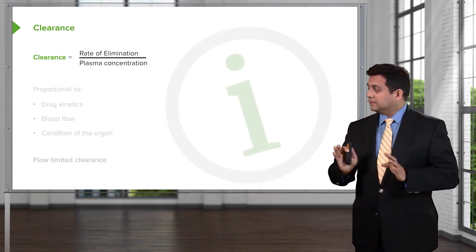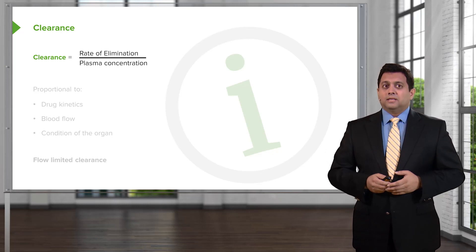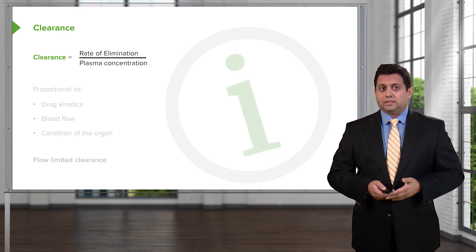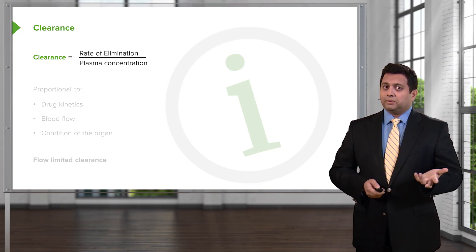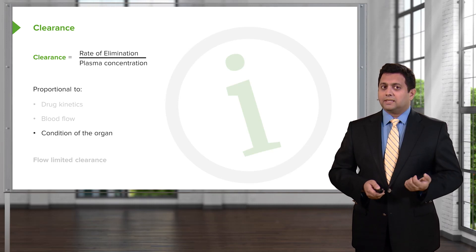First-pass metabolism is an important concept when we talk about clearance. Clearance is the rate of elimination divided by the plasma concentration. It's going to be proportional to drug kinetics, to blood flow, and to the condition of the organ itself.